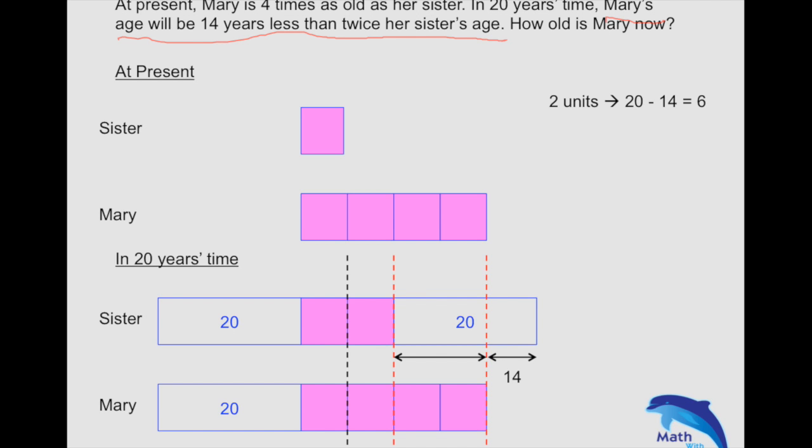We know that one unit is 6 divided by 2, which is 3. And then we know the sister's age as of now, which is four blocks—four units—so 12. Let's check our answer.